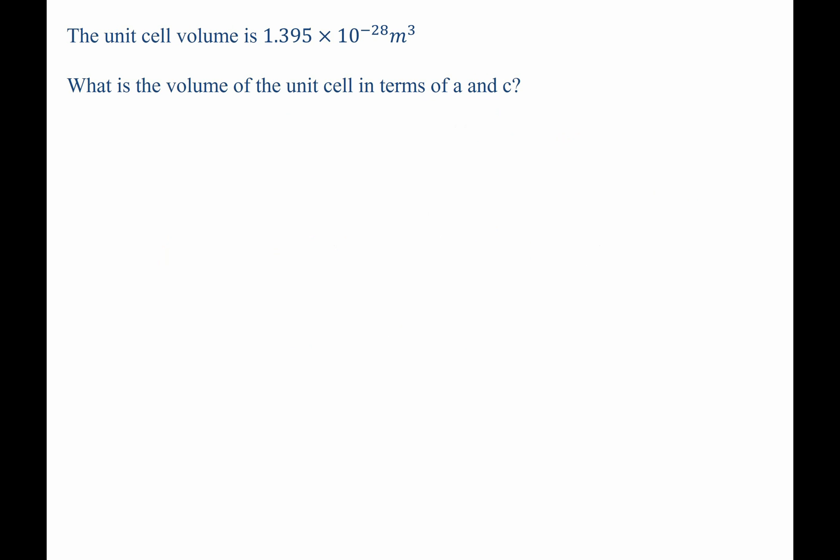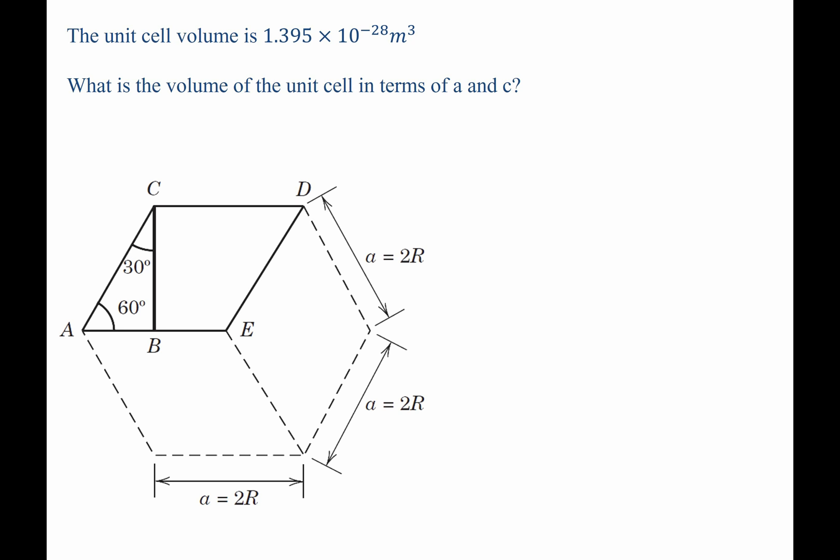For part b, they then ask us to determine the actual values of the lattice parameters a and c. Therefore, we must first come up with an expression that relates the volume of the unit cell in terms of a and c. The book has a nice expression for this.